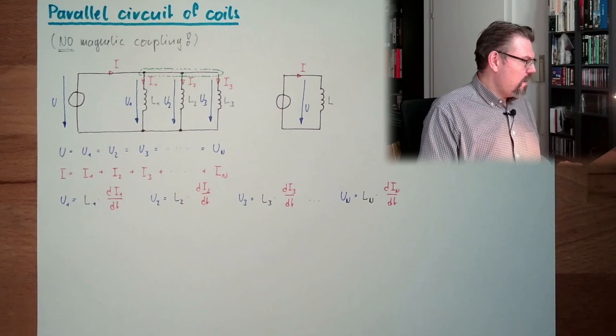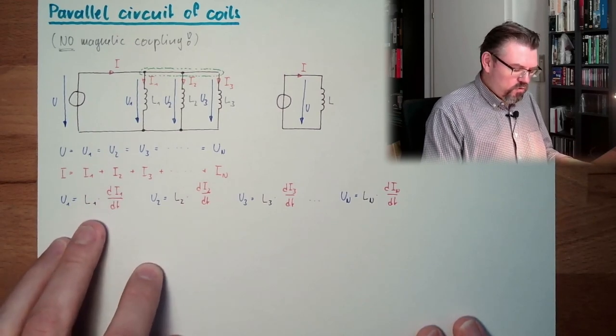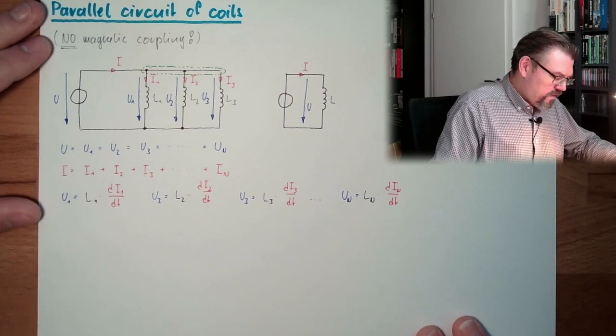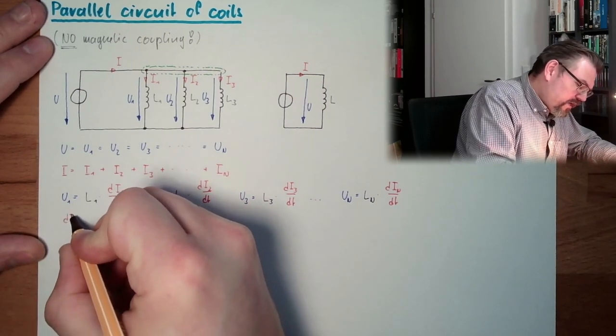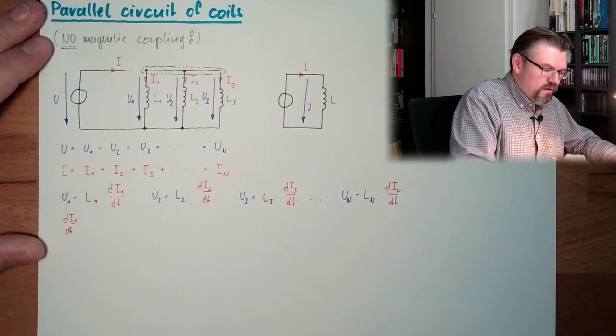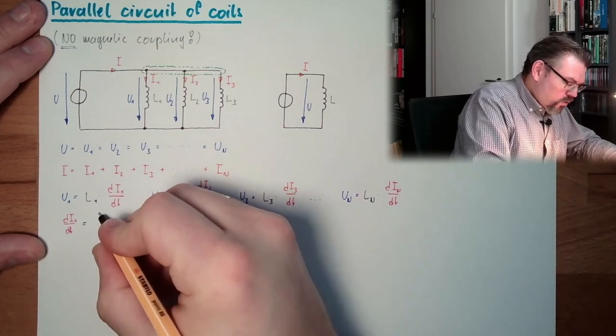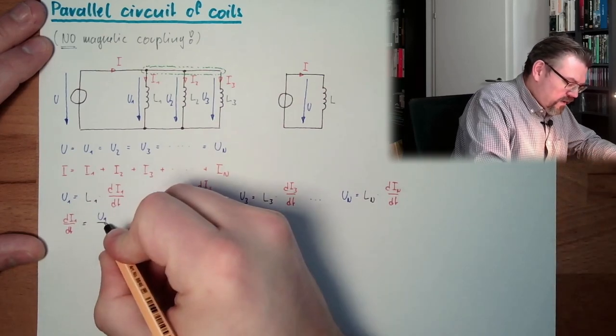So this means if I now do here a change, so that the change rate of my current equals U1 divided by L1.